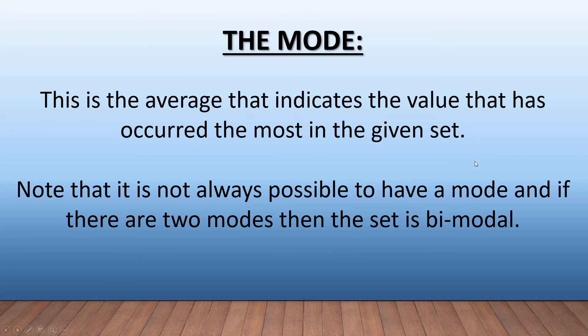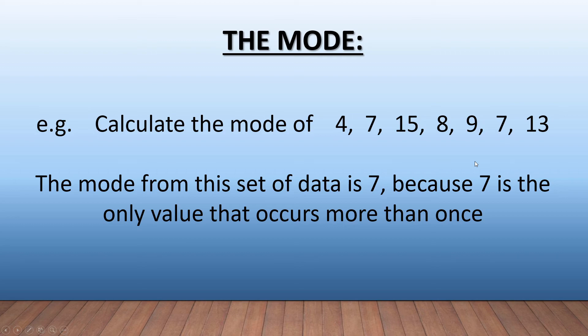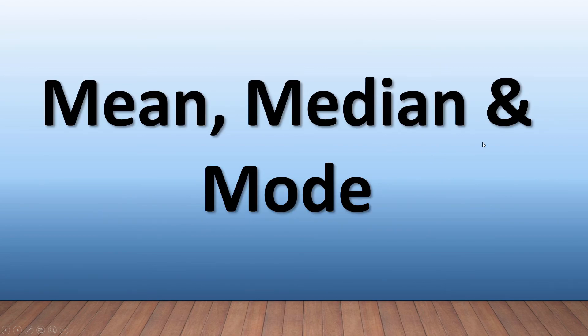Here's an example: calculate the mode of 4, 7, 15, 8, 9, 7, and 13. The mode from the set of data is 7. Why? Because 7 is the only value that occurs more than once. It's the only one that occurs more than once.